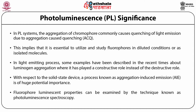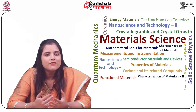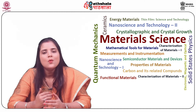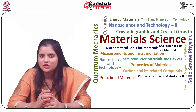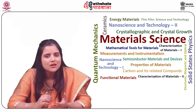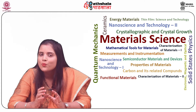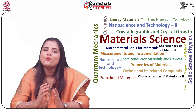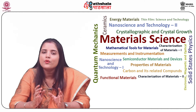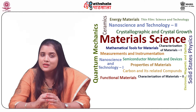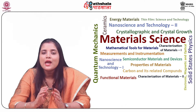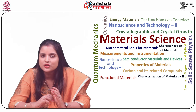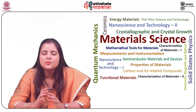Fluorophore luminescent properties can be examined by the technique known as photoluminescence spectroscopy. Let us study the different modes of photoluminescence. The first one is resonant radiation. In this process, a specific wavelength photon gets absorbed with the immediate emission of an equivalent photon. This process does not involve any appreciable internal energy transitions between absorption and emission.